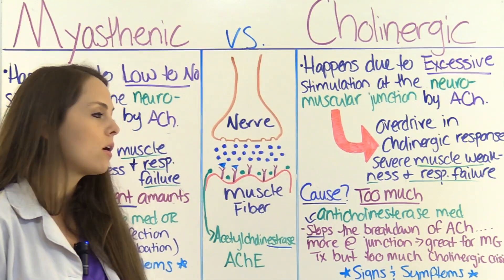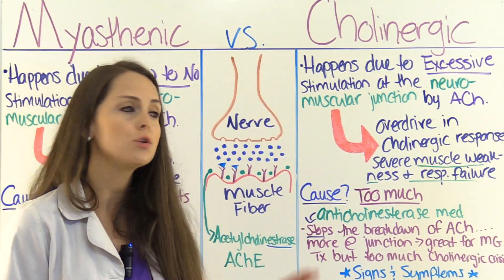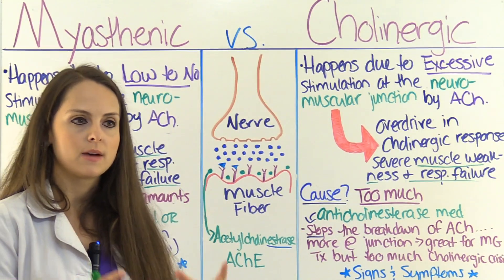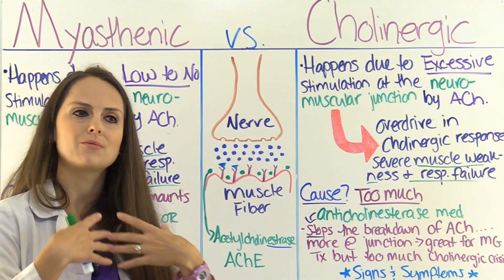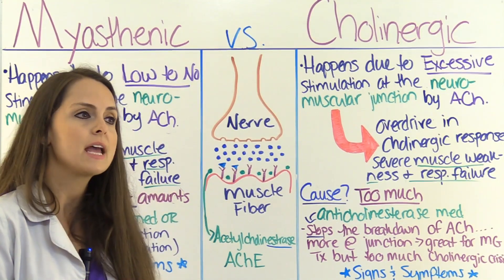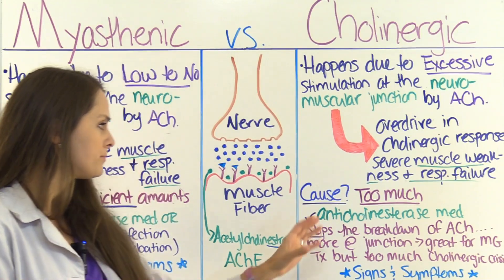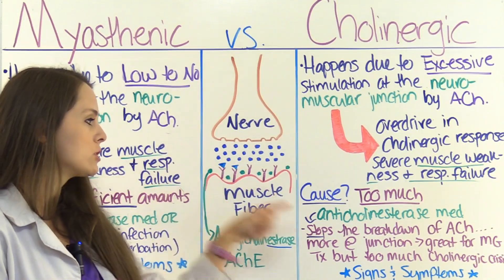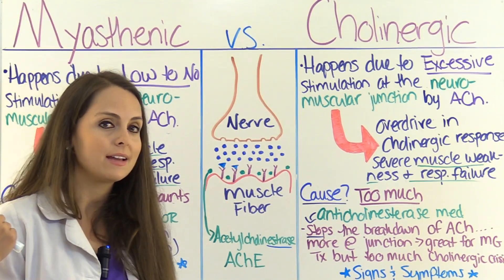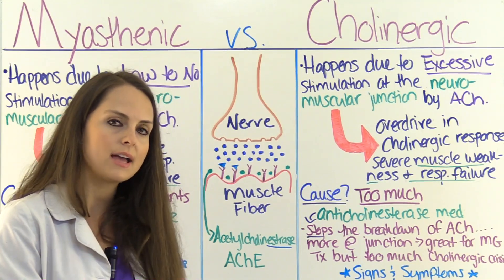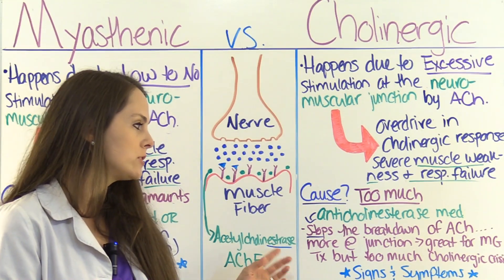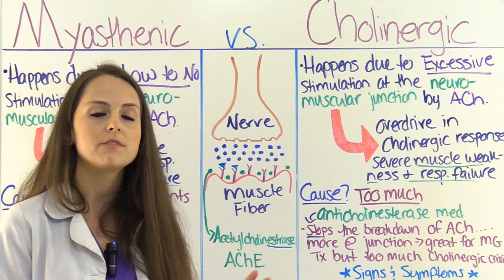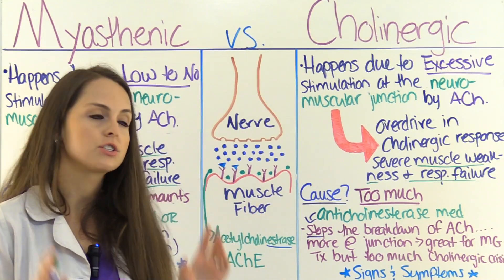With cholinergic crisis, the cause is receiving too much of their anticholinesterase medication. The patient has myasthenia gravis and is receiving too high a dose of this medication. It is stopping the breakdown of acetylcholine, so there's more at the neuromuscular junction — which is great in myasthenia gravis, but way too much causes the cholinergic crisis, and those muscle fibers are just overstimulated.